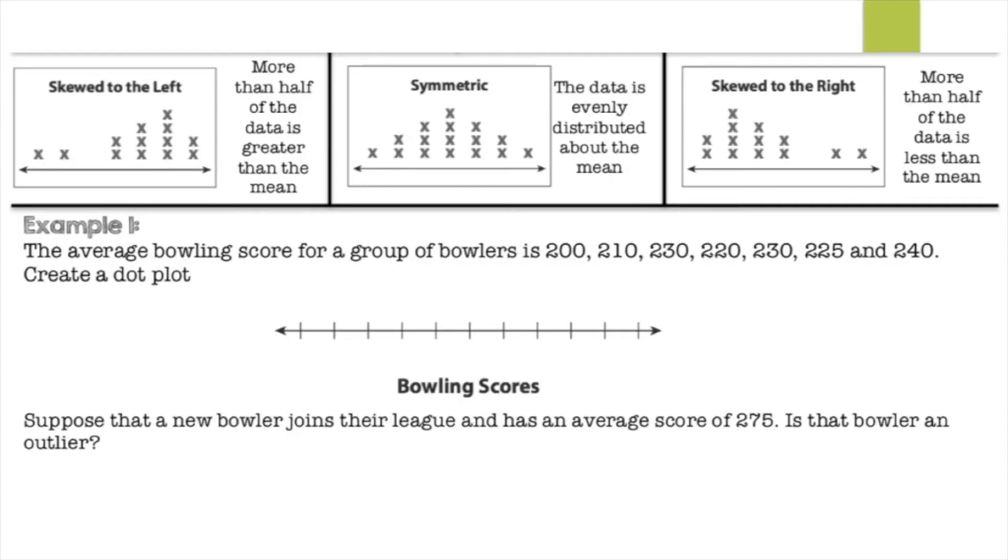And then skewed to the right, you can see that the numbers that are skewed are to the right, and all the data is shifted to the left. So more than half of the data is less than the mean. So that's skewed to the right. And then for the left, more than half of the data is greater than the mean. So that means it's skewed to the left.